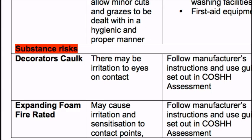Substance risks are substances or chemicals that are used for the task that may pose a risk. Examples of this are expanding foam, grip fill, or simply dust. So we have the physical risks from carrying out the task, such as working off ladders, and we have the substance risks that we may encounter whilst carrying out the task.